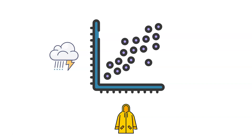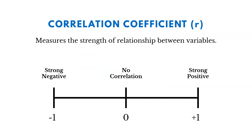Based on this example, it looks like the relationship is positive — as there's more rain, there tends to be more sales of raincoats. The way that we really measure correlation and quantify it is using the correlation coefficient.